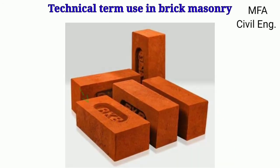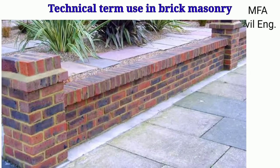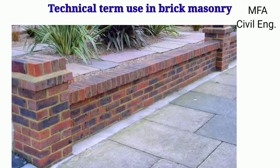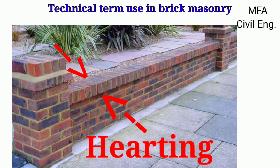The edge formed by the intersection of the plain surfaces of a brick is termed the arris. In first class quality brick, the arris are sharp and straight. The portion of a wall between the facing and the backing is called the hearting.